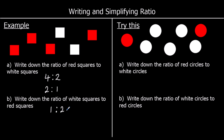One for you to try, so give this a go. Write down the ratio of red circles to white circles. So how many red circles do we have? We've got two. And we write a colon. And how many white circles do we have? We've got five white circles. So the ratio of red circles to white circles is two to five. We can't simplify this, so this is our answer. And the ratio of white circles to red circles is the same thing but the other way around, so it's five to two.